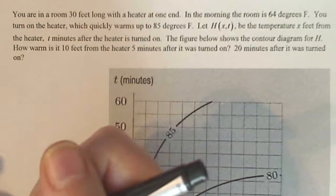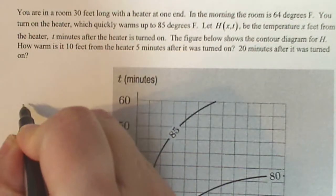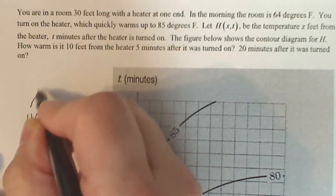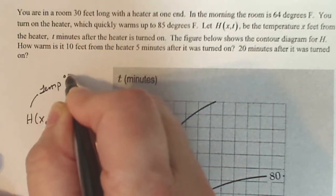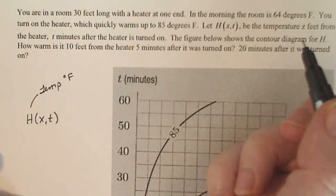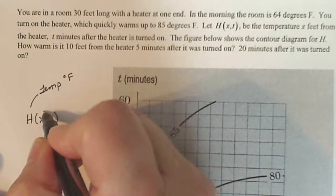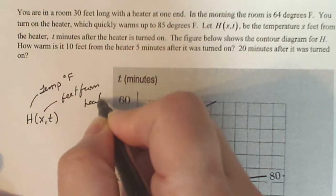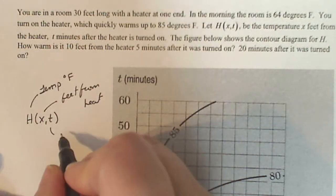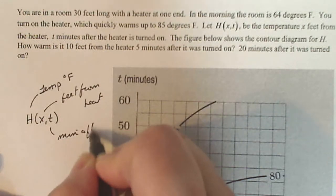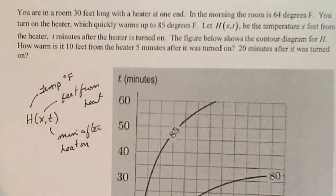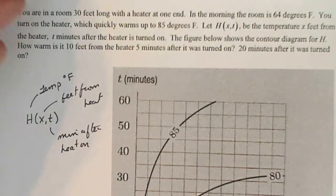All right, now before I go any further, I'm just going to take some notes. H of x,t - this represents temperature in degrees Fahrenheit after the heat is turned on. x is feet from the heater, and t is minutes after the heater is on. It's a good idea when you're working with a variety of variables to write down what they mean without them being in a bunch of words.